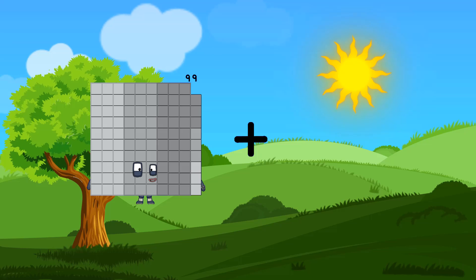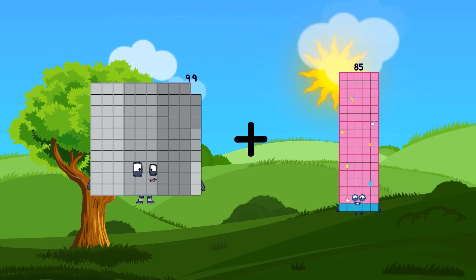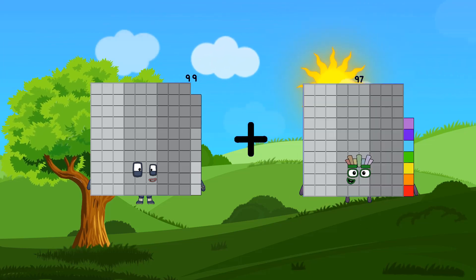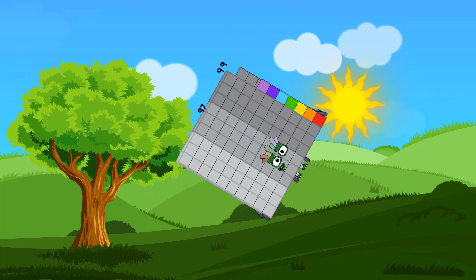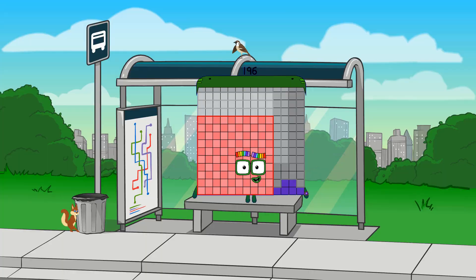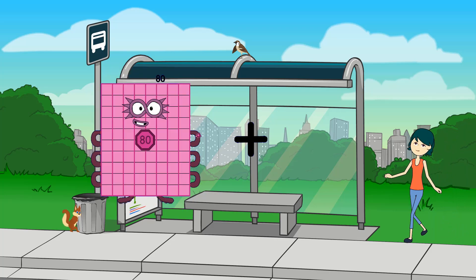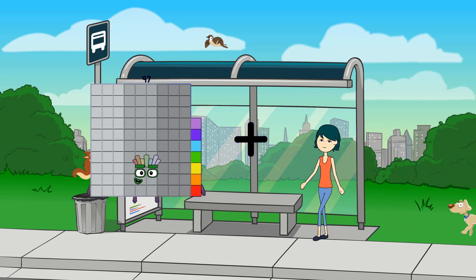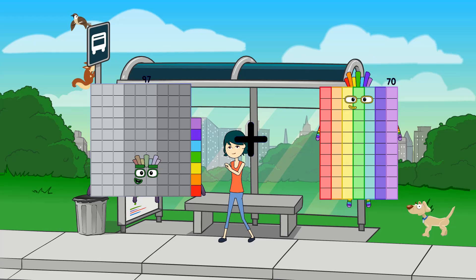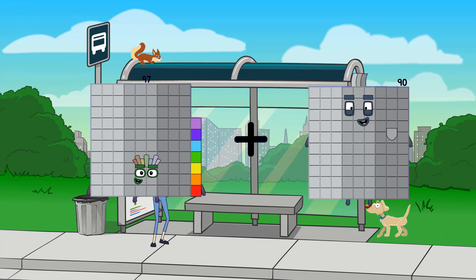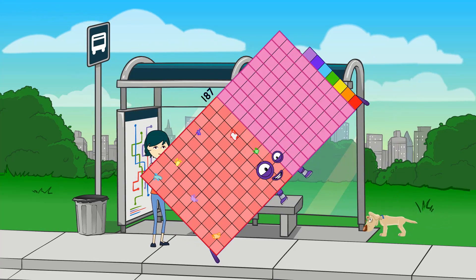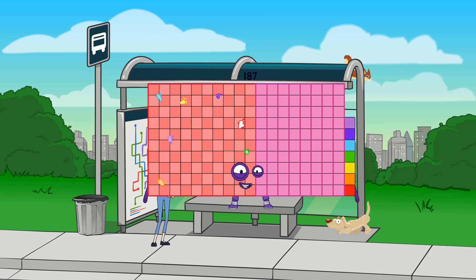99 plus 97 equals 196. 97 plus 90 equals 187.